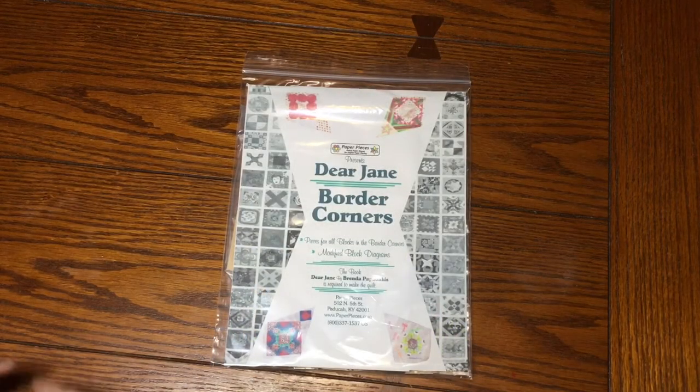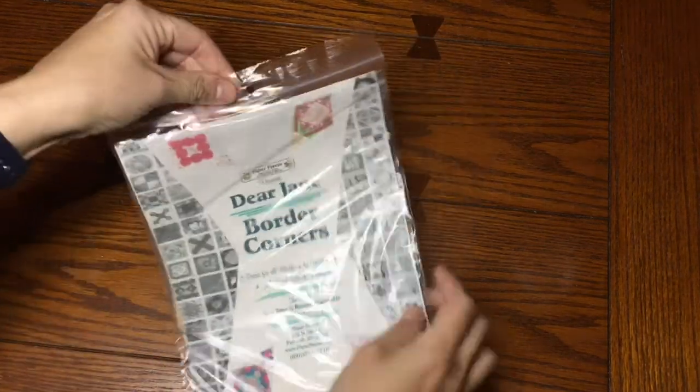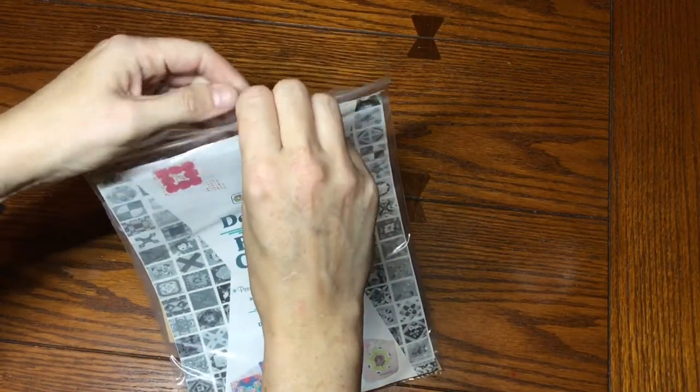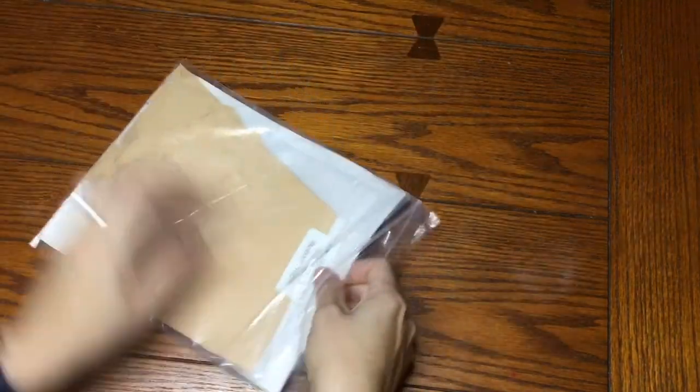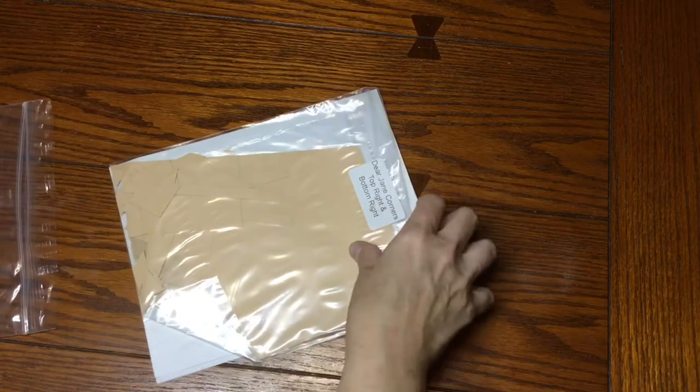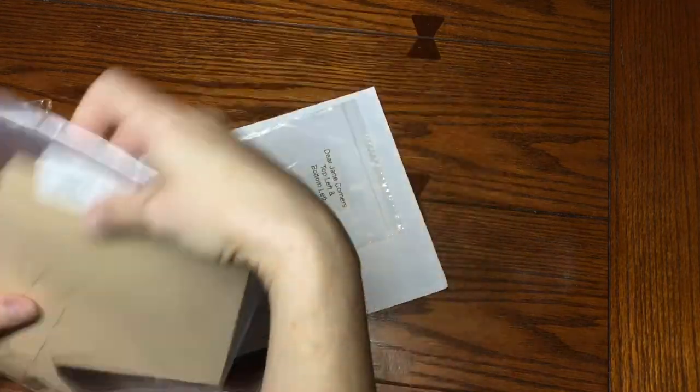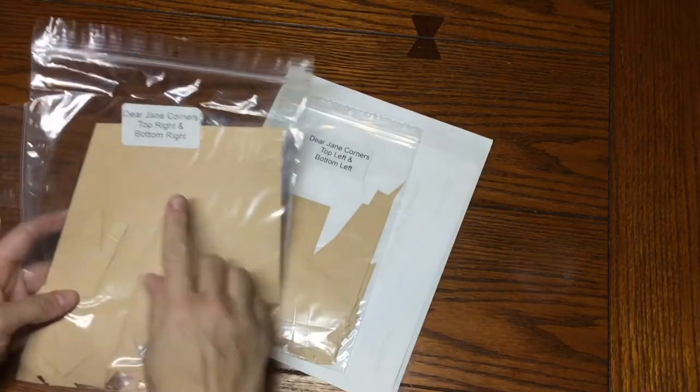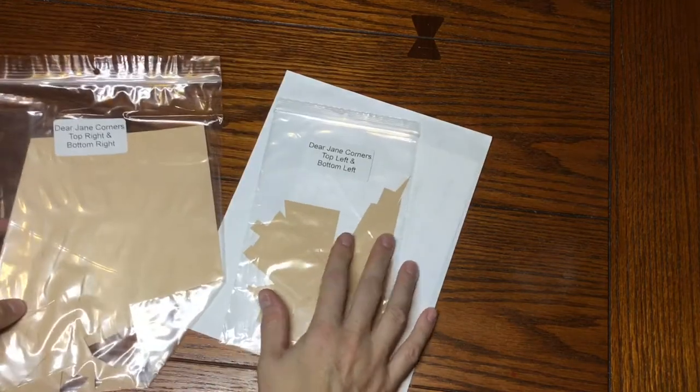So now we're on to the Border Corners pack, and we're going to crack this open and see what's inside here. As usual, we have the bag packs. Looks like we've got two packs, the right side and the left side.